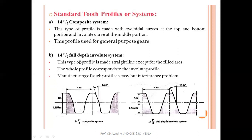The 14.5 degree full depth involute system has a straight-line tooth profile, except at the ends which have a fillet radius. We use the involute system because for the cycloidal curve the manufacturing cost is higher. However, the involute tooth profile has one basic problem, which is undercutting. This can be avoided by maintaining the pressure angle and the center distance between the gear pair.